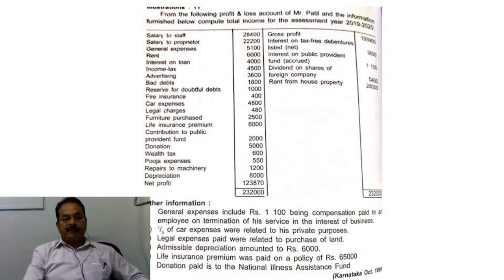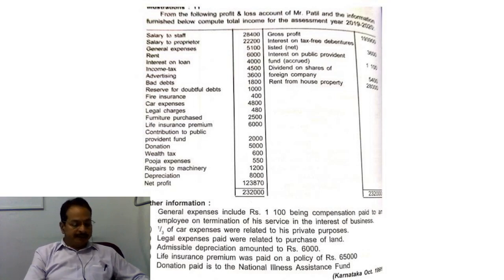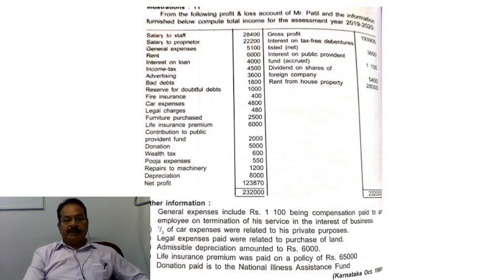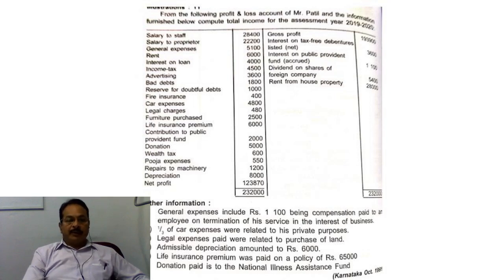Looking at the debit side of the profit and loss account: salary to staff is allowed; salary to proprietor is disallowed — 22,200. General expenses are allowed; note that it includes Rs. 1,100 being compensation paid to an employee on termination of his service in the interest of business, which is also allowed. Rent is allowed, interest on loan is allowed, income tax is disallowed — 4,500.